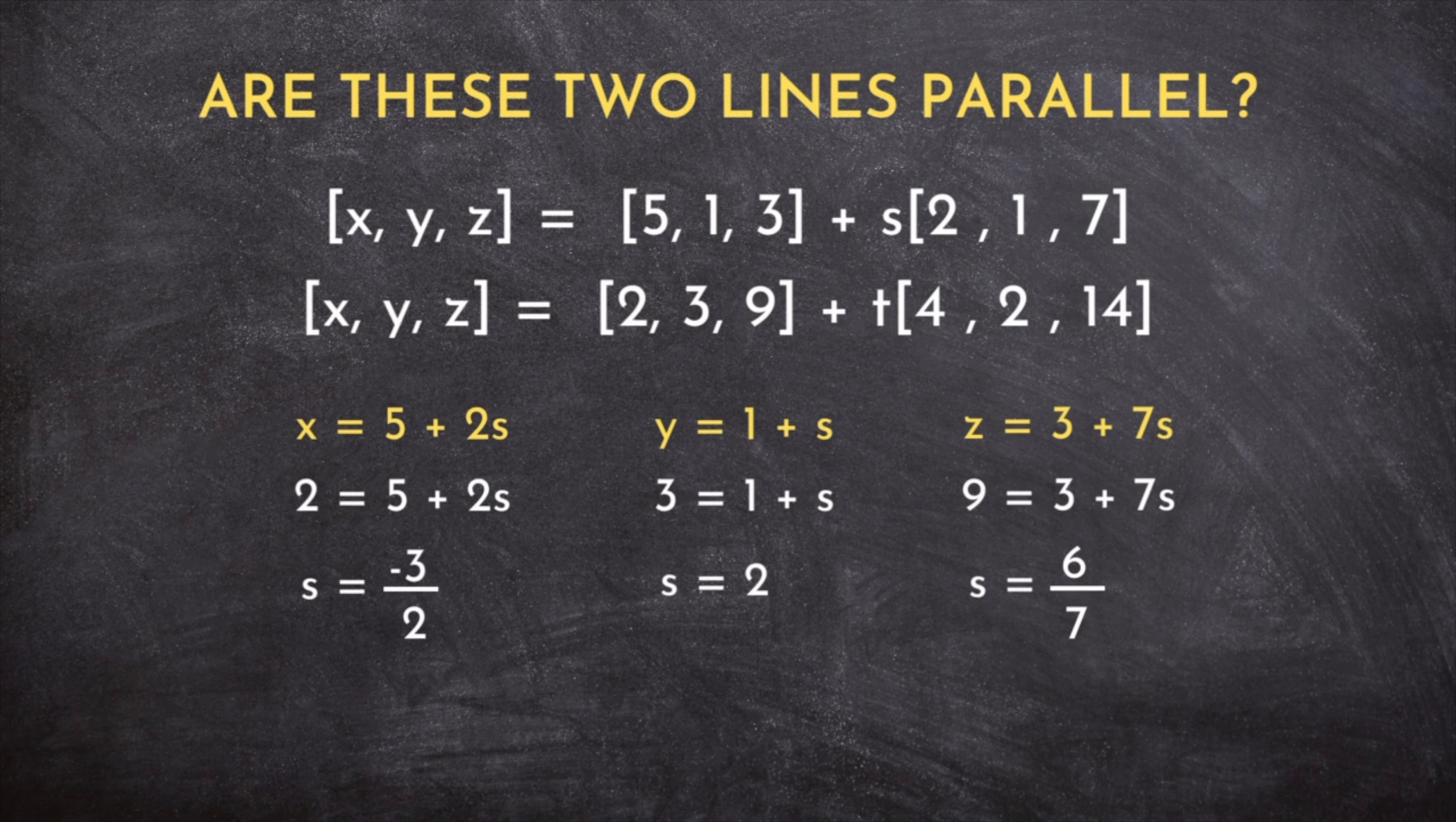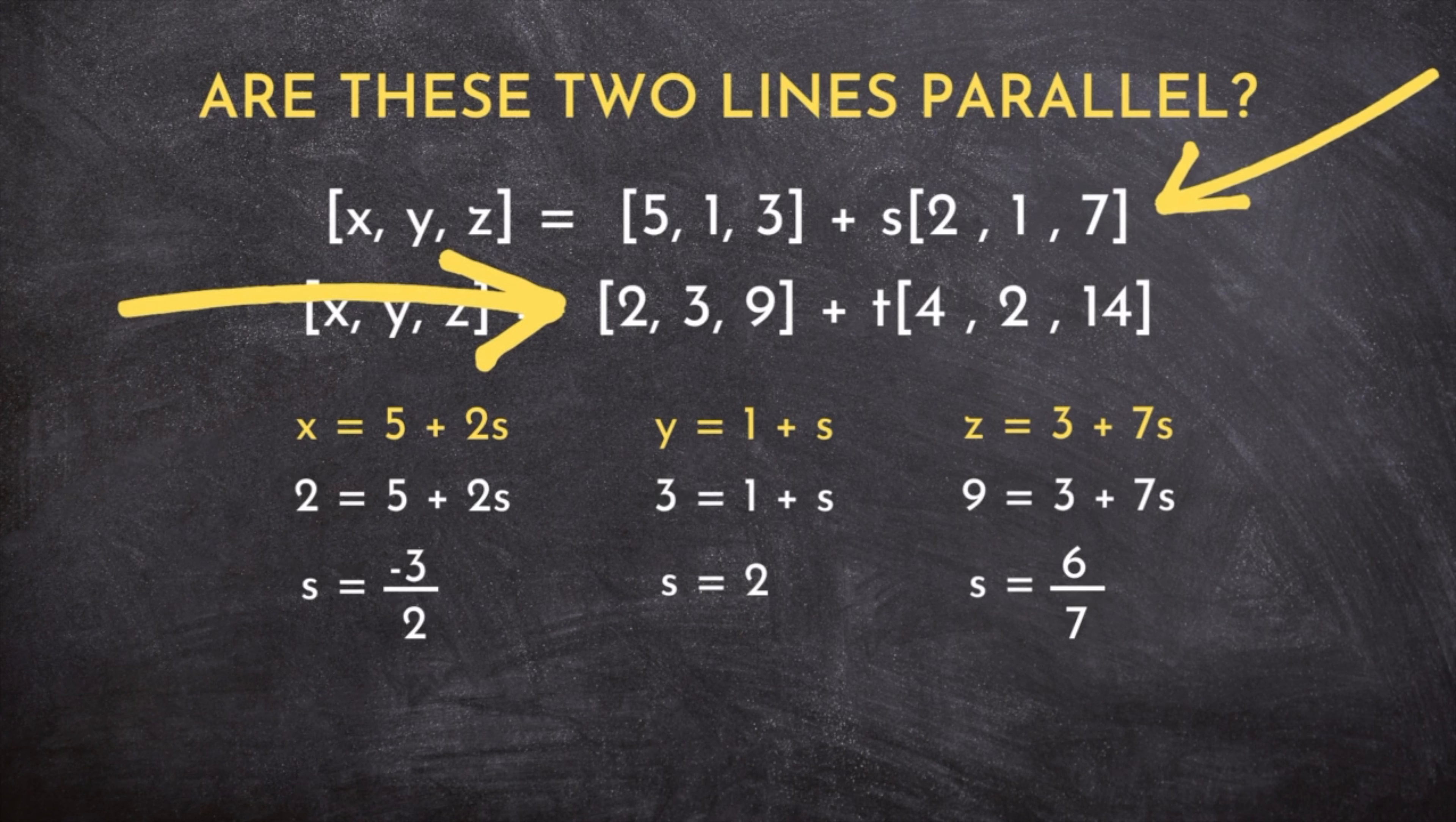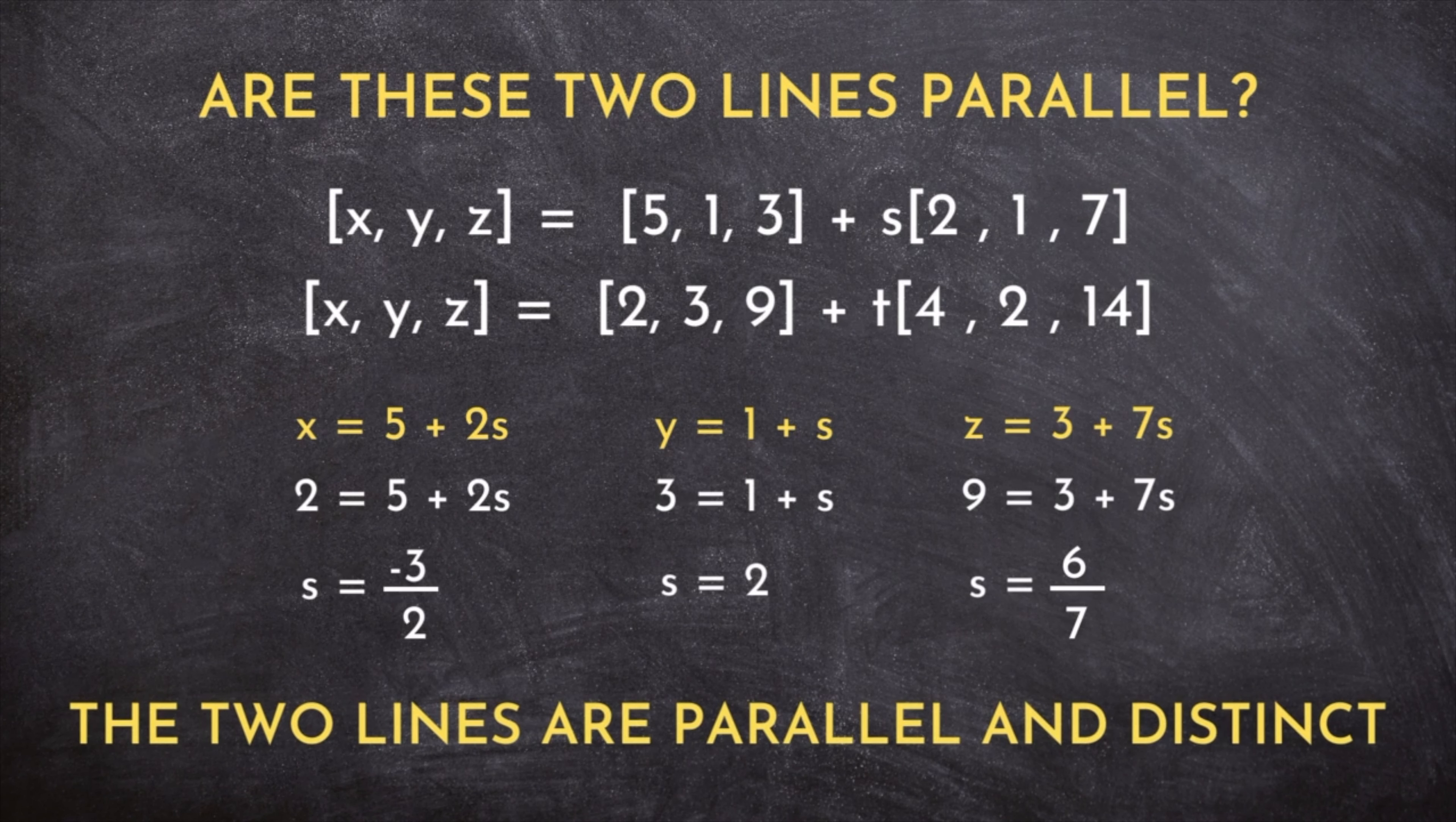But you'll see that when we solve, we do not get the same value for s in each of our equations. And this is what tells us that this point is not on this line, meaning the two lines must be parallel and distinct.